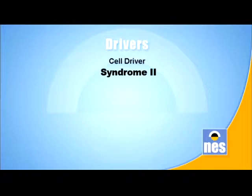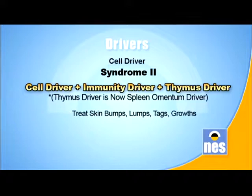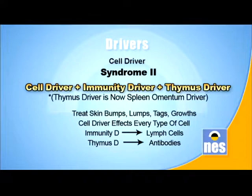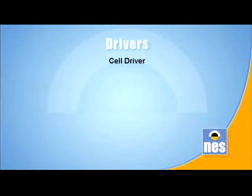The second syndrome of cell driver is a pattern to look out for on your NES screen: cell driver plus immunity driver plus thymus driver. It's the pattern that's the diagnosis - the individual items on NES aren't really a diagnosis, but you can see a pattern and be more sure. This combination is for skin lumps, skin bumps, skin tags, even some sorts of growths. The cell driver is affecting every type of cell in the body, the immune driver is affecting the lymph cells, and the thymus driver is affecting the antibodies - which is about long-term immunity. To this we can add a star if needs be later in treatment.